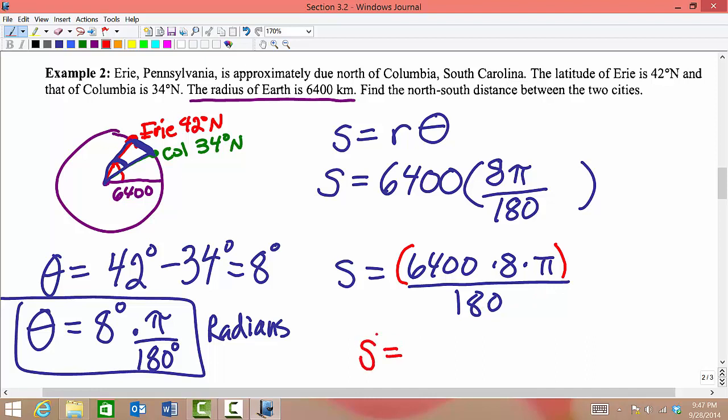So the distance between the two cities, this is our arc length that we're going to solve for here. The distance between the two cities would be approximately 893.61 kilometers.